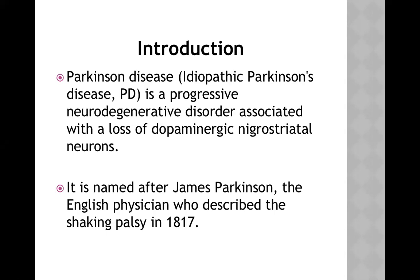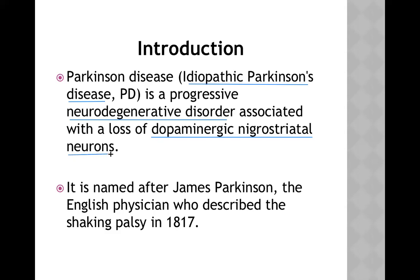Parkinson's disease, also known as idiopathic Parkinson's disease, is a progressive neurodegenerative disorder associated with the loss of dopaminergic nigrostriatal neurons. It is usually an idiopathic condition where there is progressive death — neurodegeneration — of neurons in the nigrostriatal system or substantia nigra, decreasing in number. The substantia nigra is located in the midbrain.